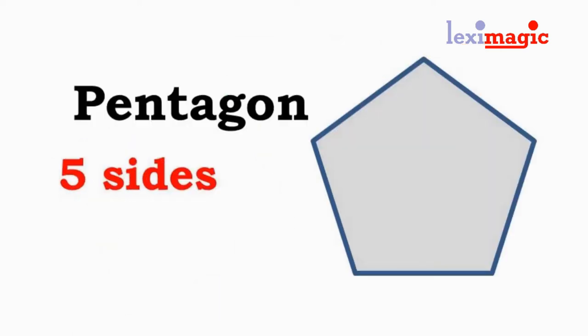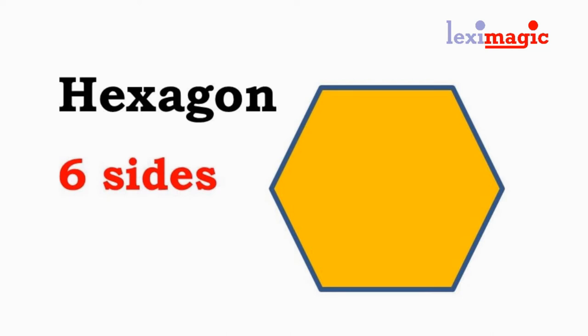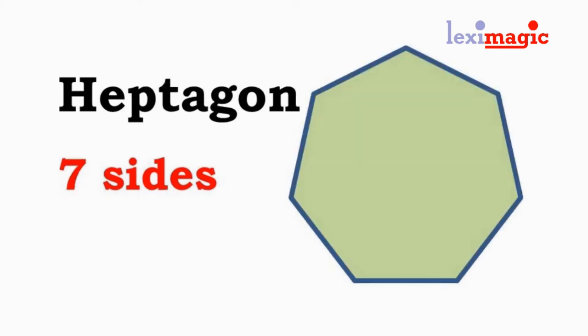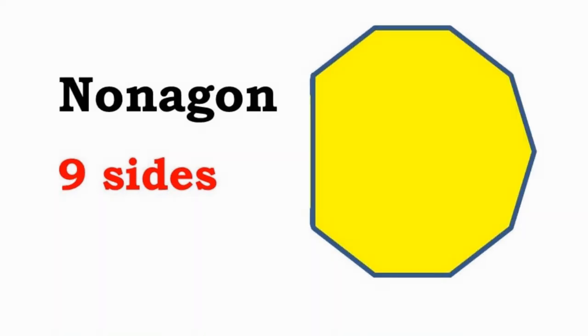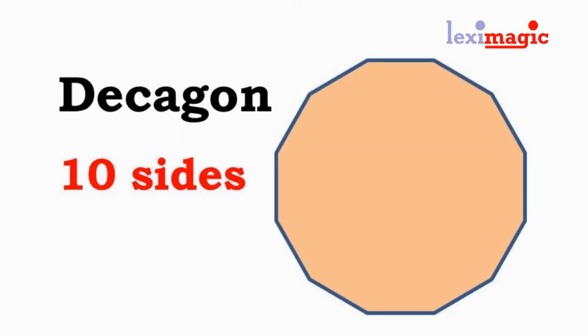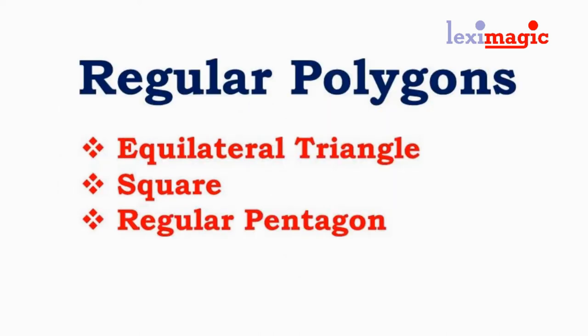A pentagon is a five-sided polygon. A six-sided polygon is a hexagon. For seven sides we have a heptagon. For eight sides we have an octagon. For nine sides we have a nonagon. For a polygon having ten sides we have a decagon and so on. A regular polygon is a polygon having equal sides and having all internal angles equal.